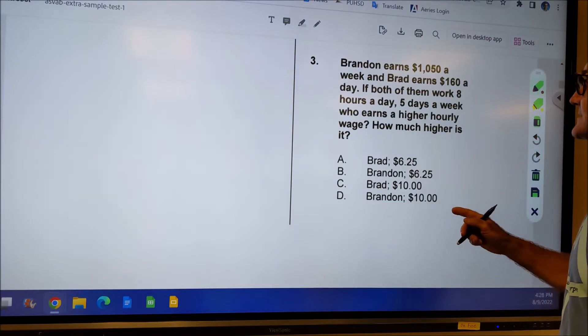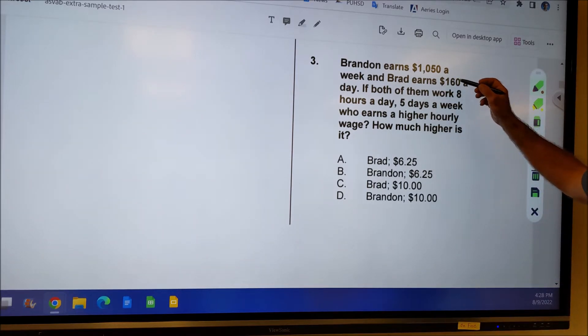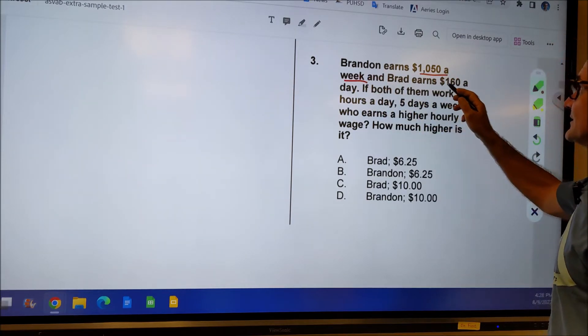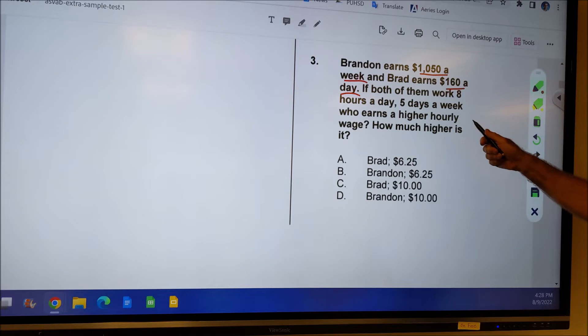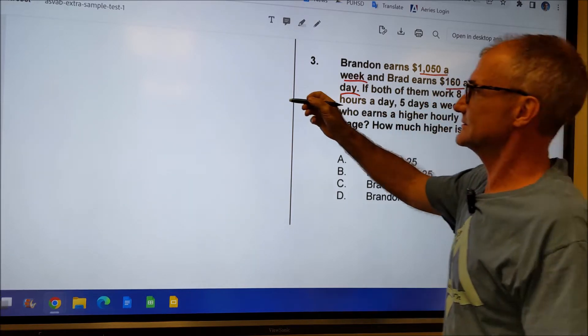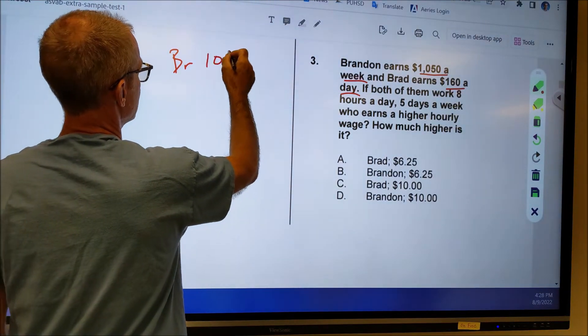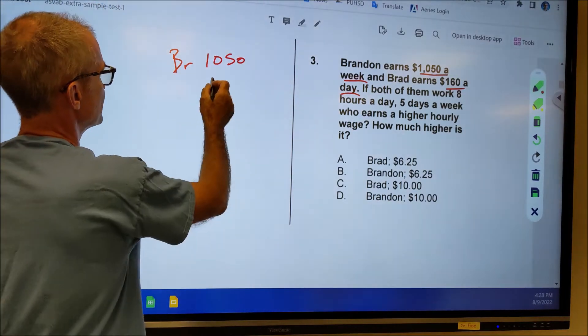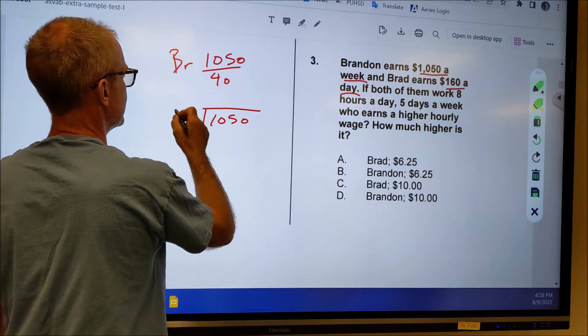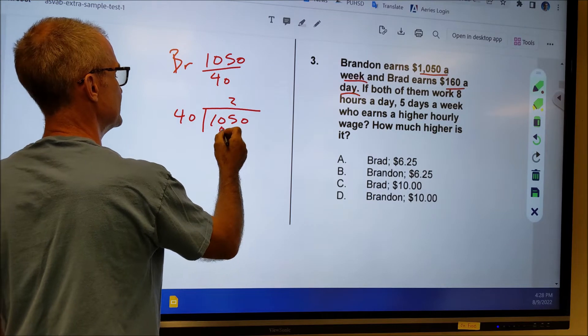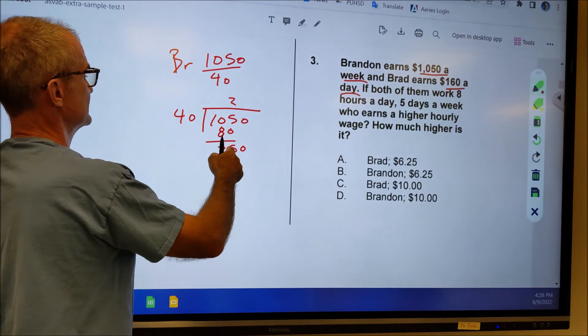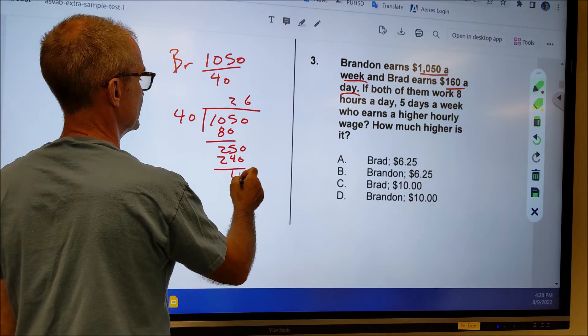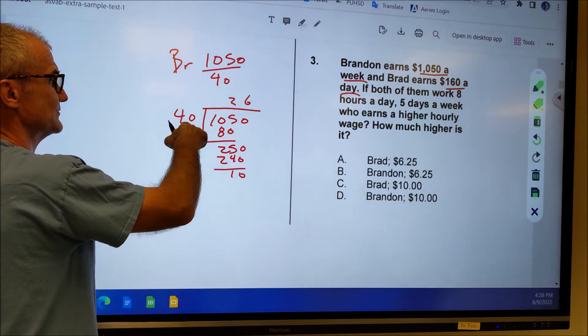Problem number three. This is a rate problem and also math operations. Brandon earns $1,050 a week and Brad earns $160 a day. So it's important to note that they're different rates. Both of them work eight hours a day, five days a week. So they each work 40 hours a week. We're going to probably figure out how much they make per hour. So Brandon makes 1,050 a week. I'm going to do 1,050 divided by 40 hours. Won't go in there, but it'll go in there twice to give me 80. 105 minus 80 is 25, 250. 40 goes into 256 times. You get 240 with 10 left over. So 10 over 40 is my remainder. So 26.25. So Brandon makes $26.25 per hour.